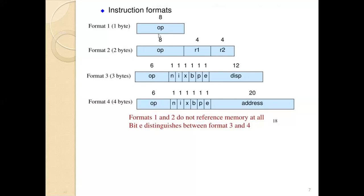Format 1 is one byte containing only the op code. Format 2 is two bytes containing the op code and register operands (4 bits for each register). Formats 1 and 2 do not reference memory at all and are used for simple instructions. Format 3 is 3 bytes: first 6 bits for op code, 6 flag bits (N, I, X, B, P, E), then 12 bits for a displacement field. Format 4 is 4 bytes: 6 bits for op code, 6 flag bits, then 20 bits for the address field.